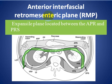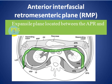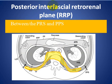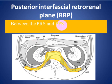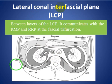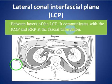The anterior interfascial retroperitoneal plane, shown in green color, crosses the midline, and is an expansile plane located between the anterior pararenal space and the perirenal space. The posterior interfascial retroperitoneal plane, shown in yellow color, is between the perirenal space and the posterior pararenal space, and also crosses the midline. The lateral cone interfascial plane lies between the layers of the lateral cone fascia and communicates with the retroperitoneal planes at the fascial trifurcation.